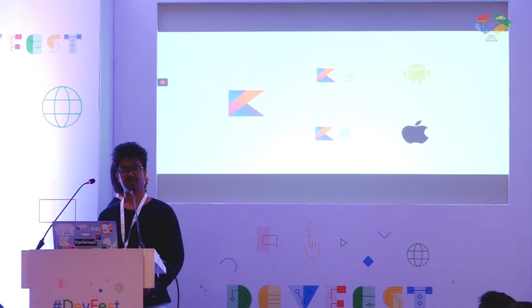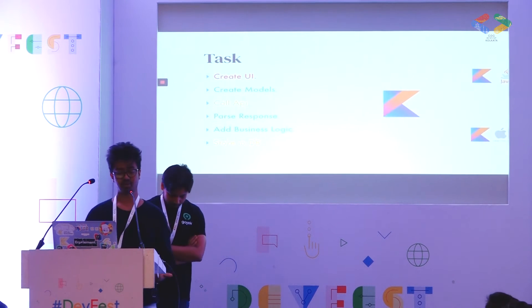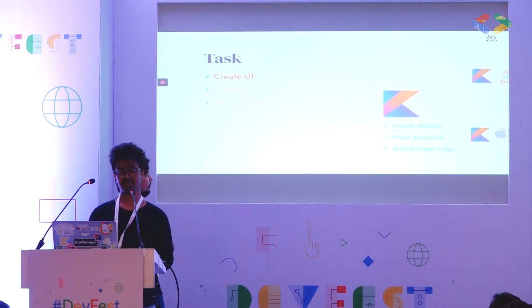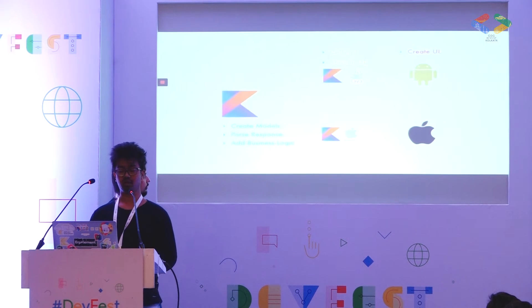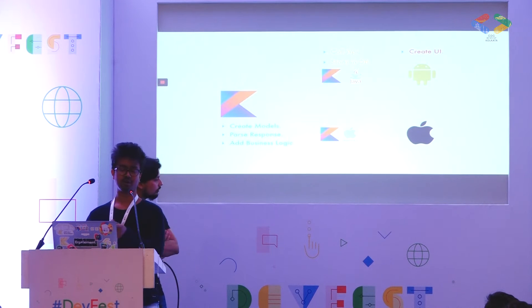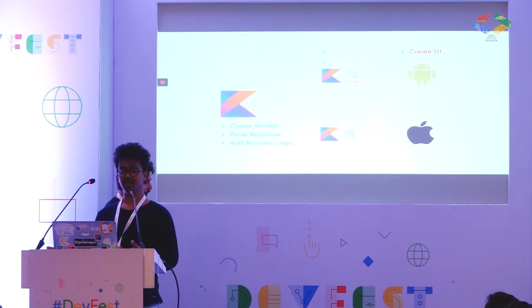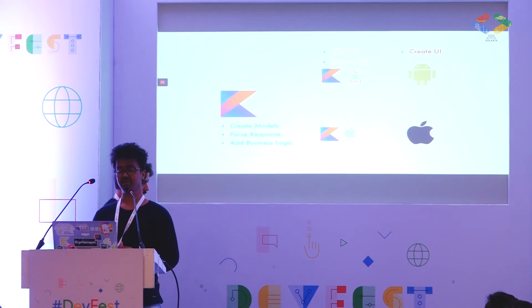If we want to make this application for Android and iOS, here's how we structure the code. Since creating models, parsing responses, and adding business logic are platform-independent, we put them inside our common Kotlin code. We put calling the API and storing to DB inside platform-dependent Kotlin, which we'll discuss later. We write our UI in totally platform-specific languages — for Android we use XML and Java, and for iOS we use Swift.